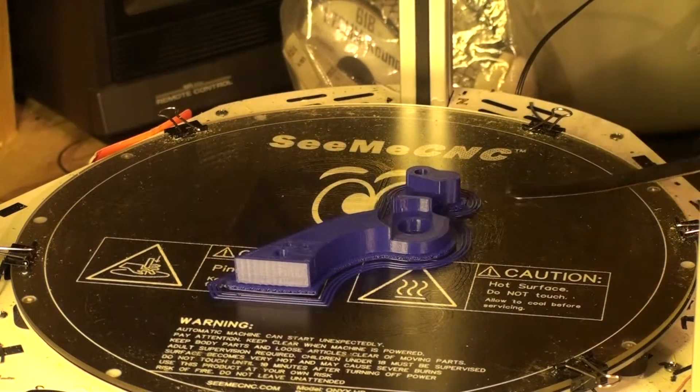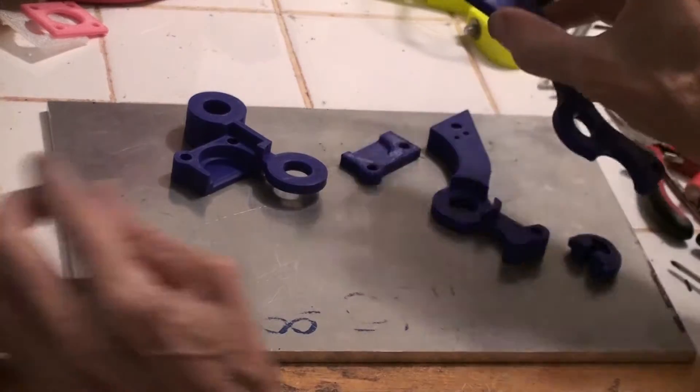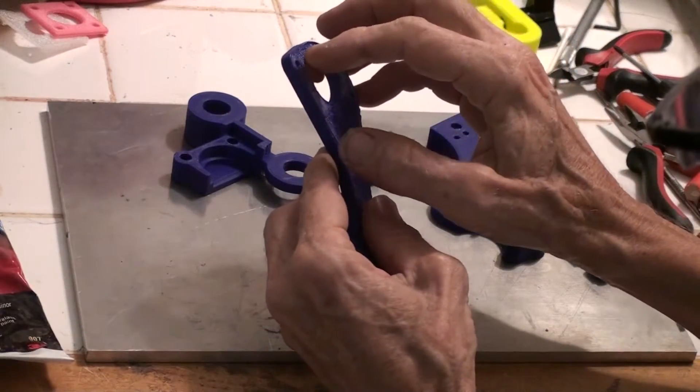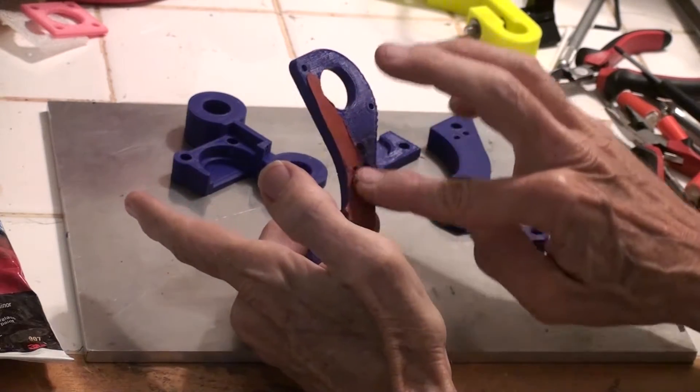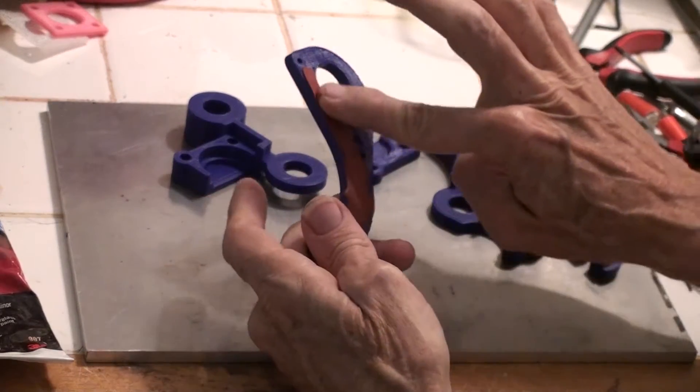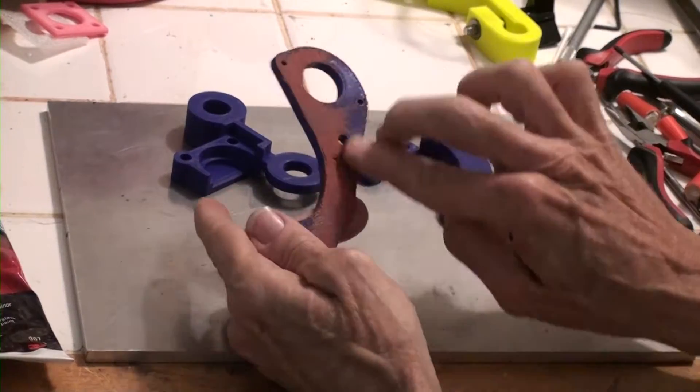This has two advantages. One is that the part can be 3D printed without support. And the other is that there will be no undercuts in the part that would make it impossible to separate the model from the mold after the mold has been cast.